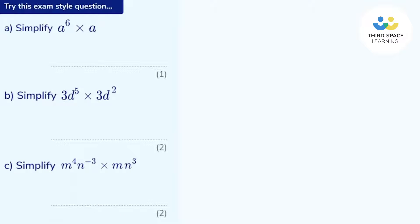Let's take a look at an exam-style question to see how this works in practice. Part A says: simplify a to the power of six multiplied by a. Now this is actually just a to the power of one. The laws of indices tell me that when I'm multiplying terms together with the same base — in this case a — I can just add the powers. So this is the same as a to the power of six plus one, which is just a to the power of seven.